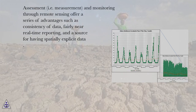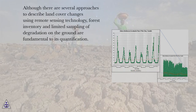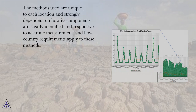Assessment and monitoring through remote sensing offer a series of advantages such as consistency of data, fairly near real-time reporting, and a source for having spatially explicit data. Although there are several approaches to describe land cover changes using remote sensing technology, forest inventory and limited sampling of degradation on the ground are fundamental to its quantification. The methods used are unique to each location and strongly dependent on how components are clearly identified and responsive to accurate measurement, and how country requirements apply to these methods.